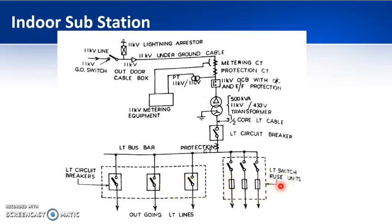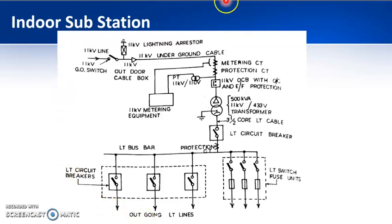You will have circuit breakers or switch fuse units depending upon the capacity of the loads to which they are connected. From there you are getting the outgoing LT lines. This is how a single line diagram of a particular indoor substation looks.